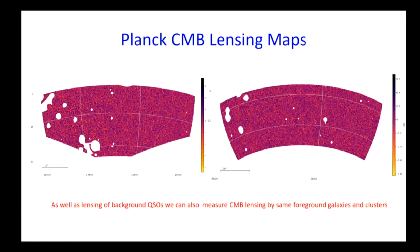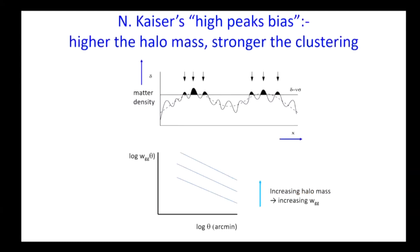Of course, foreground structures also lens the Planck CMB. Planck combines its temperature and polarization data wonderfully to produce CMB lensing maps, which are publicly available and which we use.